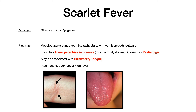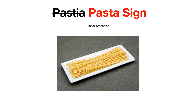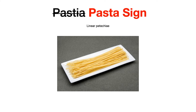Pastia's sign sounds like pasta — so picture straight spaghetti noodles, which helps you remember that Pastia's sign is linear petechiae. If you see Pastia's sign or linear petechiae, or they describe a sandpaper-like rash, stop and pick scarlet fever. That's scarlet fever.